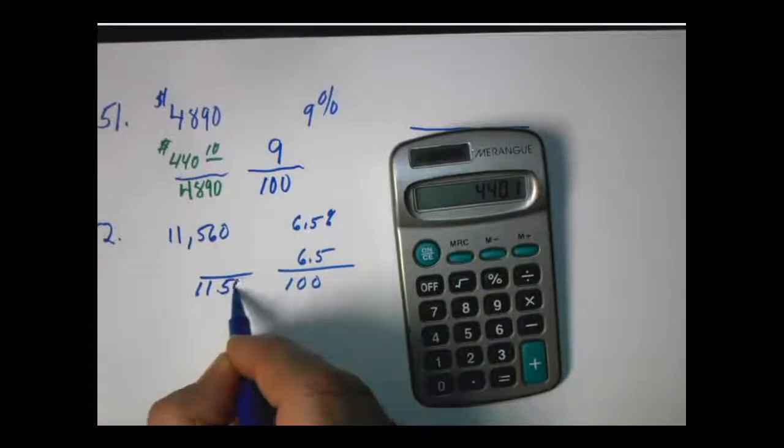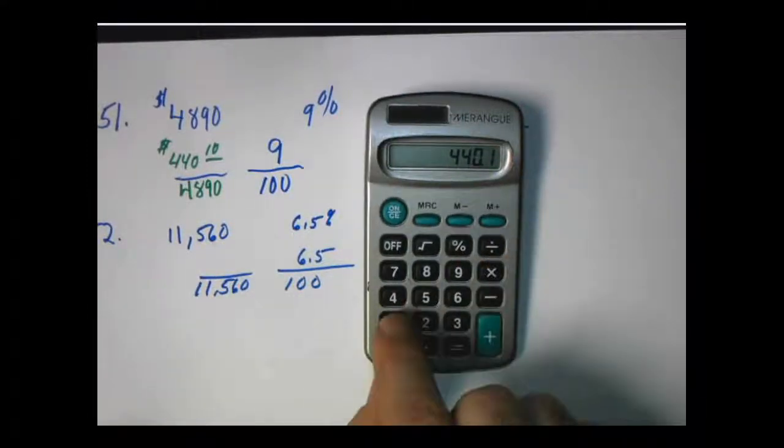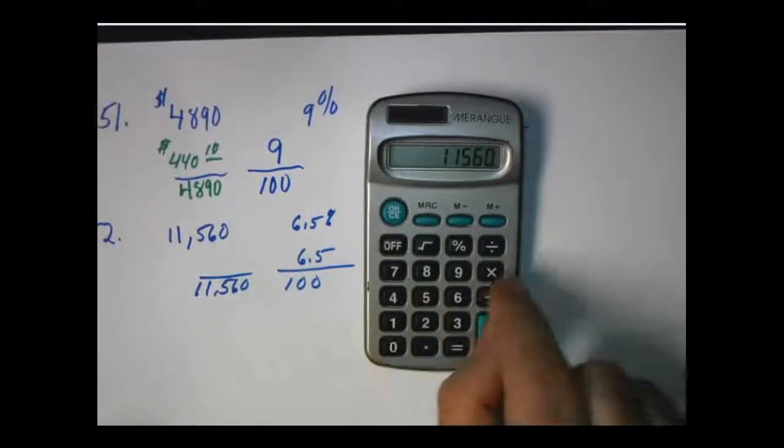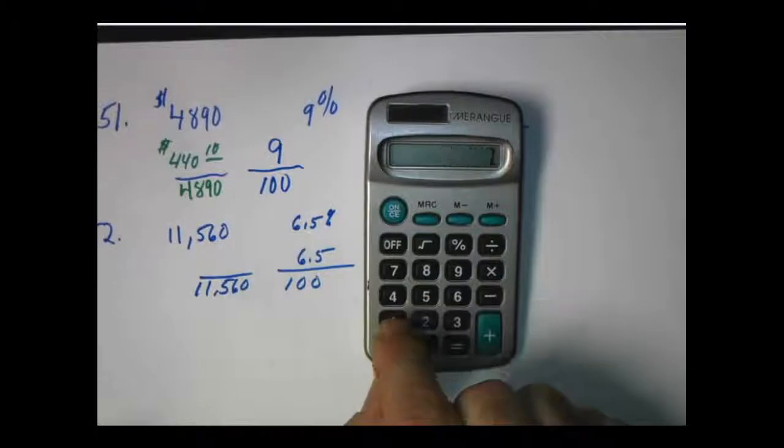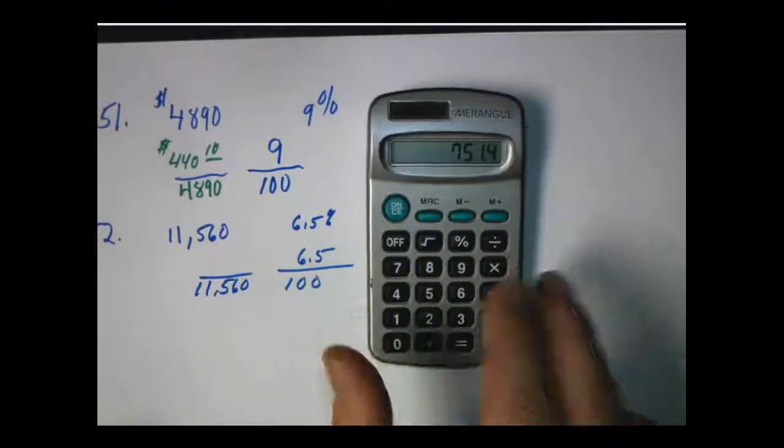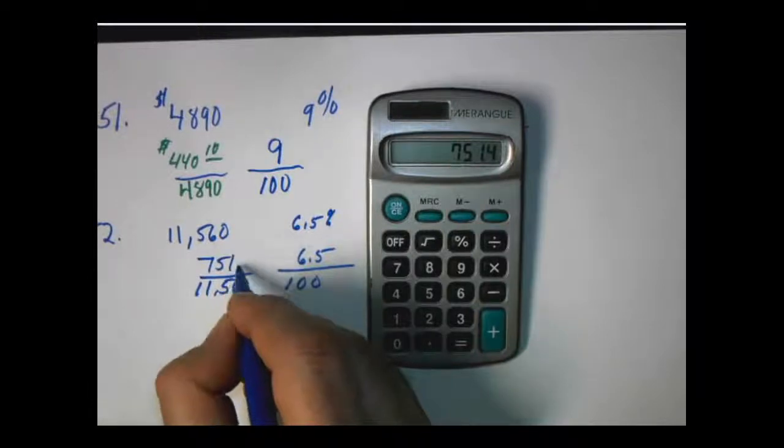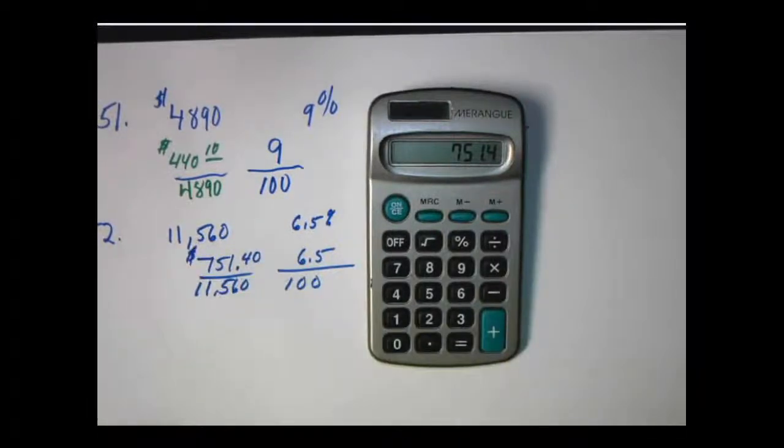And again, we're just back to working on the calculator. So we have 11,560 times 6.5 equals divided by 100. $751.40. Pretty straightforward.